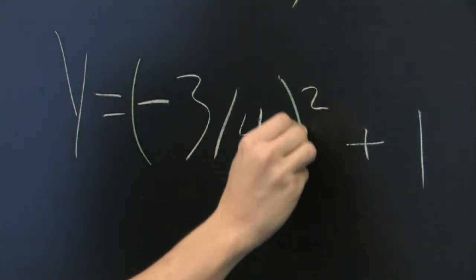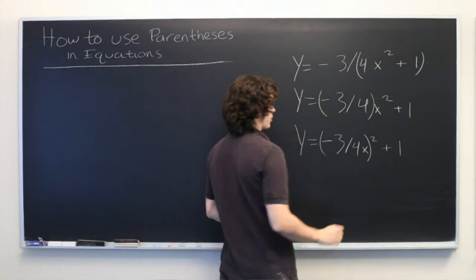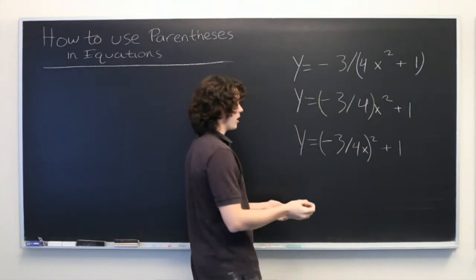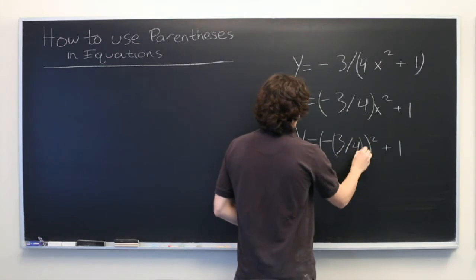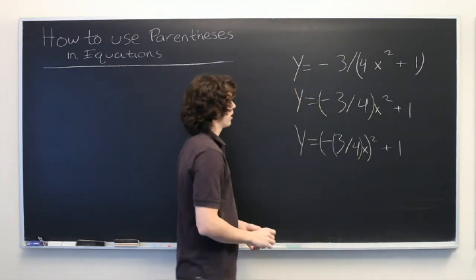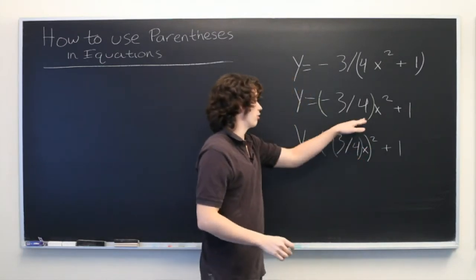We put parentheses around the entire term that we want to square. In fact, we can even make this less ambiguous by putting parentheses around this coefficient. Again, to avoid implying that x is going to be in the denominator.